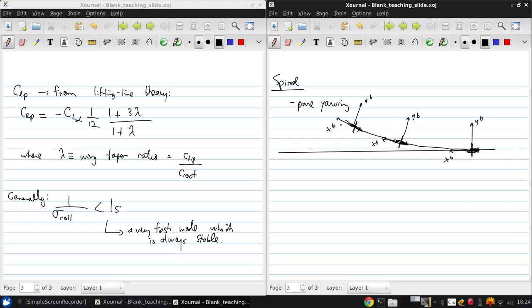Now here, since there's zero roll acceleration, so delta p dot equals 0, the 4x4 system reduces to another first-order ordinary differential equation, which is 0 equals LV delta V plus LR delta R, so that delta V is negative LR over LV delta R. And this comes from the second line of the 4x4 system of equations.